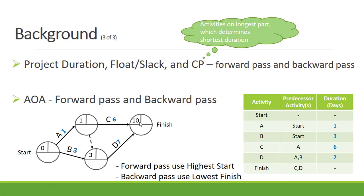Our project duration is ten days. For the backward pass, we start with ten. Ten minus seven is three, ten minus six is four or three — we use the lowest finish, which is three. Three minus one is two, three minus three is zero; the lowest finish is zero. To calculate total float, it's finish minus start: zero minus zero is zero, three minus one is two, three minus three is zero, and ten minus ten is zero. Our critical path is where total float is zero: start, activity B, D, and finish.